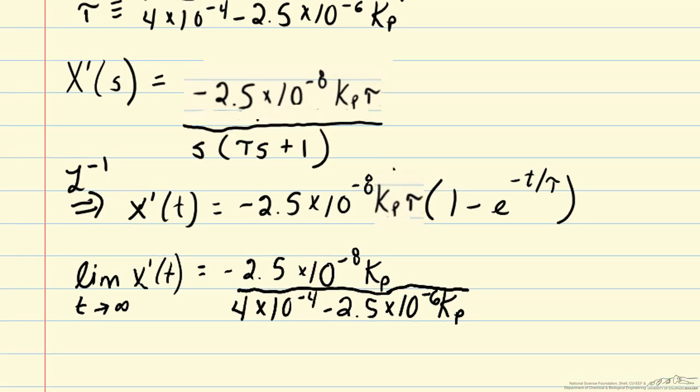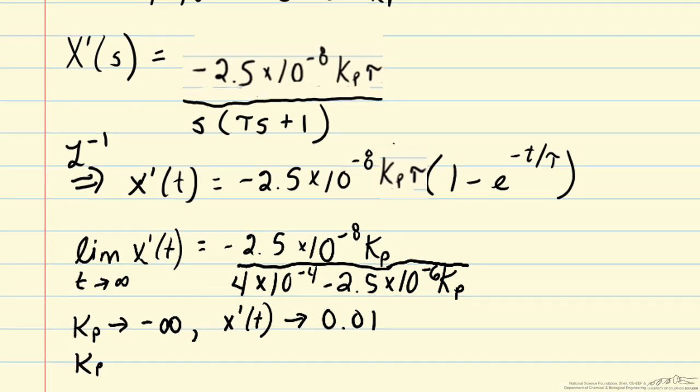So we can calculate as Kp goes to negative infinity, X prime of T at long time will go to 0.01. However, if Kp is finite, let's say negative 1000, X prime of T will go to 0.086. So we will have steady state error.